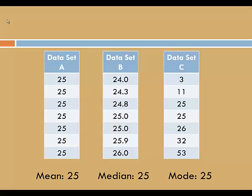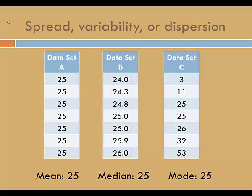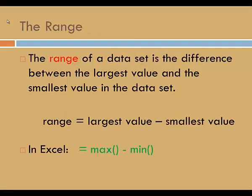To quantify this variety, we need a measure of spread, which is also called variability or dispersion. One measure of spread is the range. The range of a data set is the difference between the largest value and the smallest value in the data set.